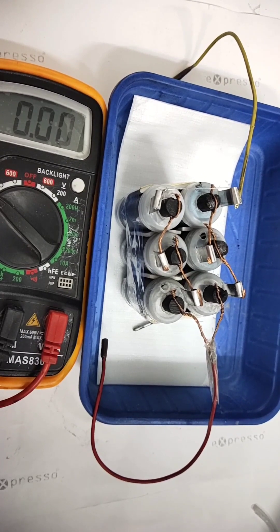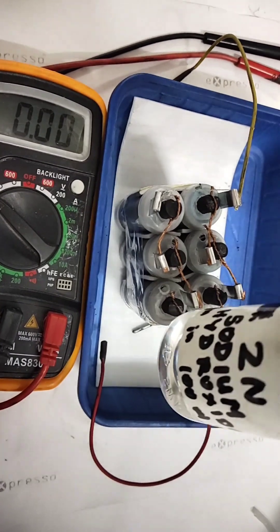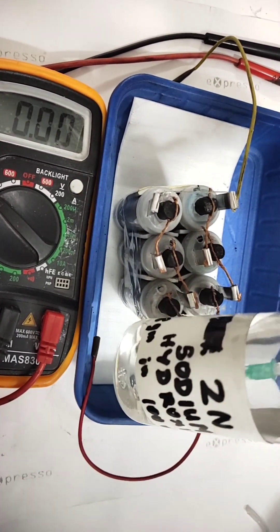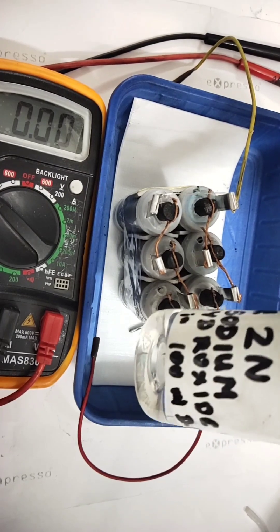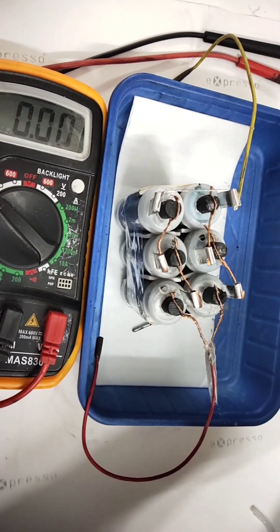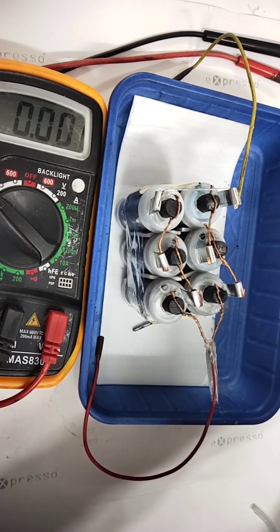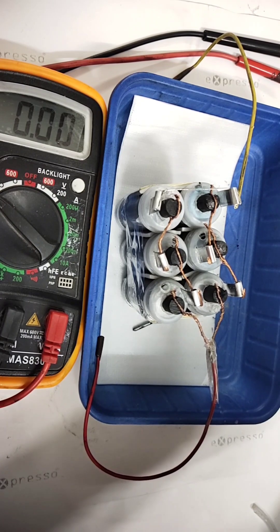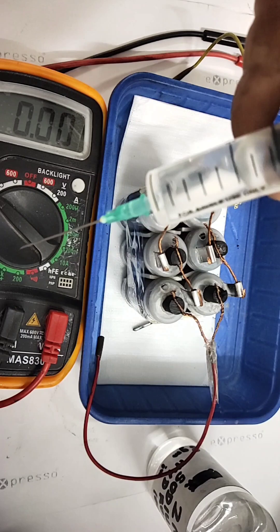I will start adding the electrolyte, 2N sodium hydroxide. How to prepare: you have to take 8 grams of sodium hydroxide dissolved in 100 ml of distilled water. For each cell I will be adding roughly 6 ml. These are all I am doing in presence of you. I am also learning. Every experiment gives me a learning.